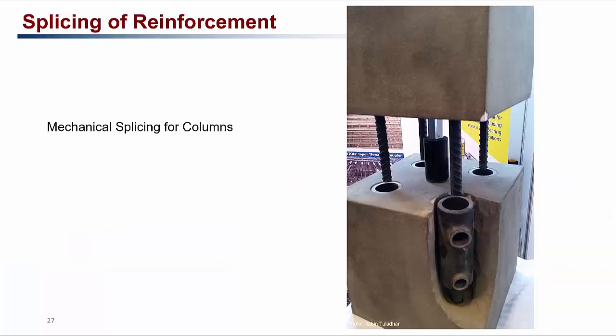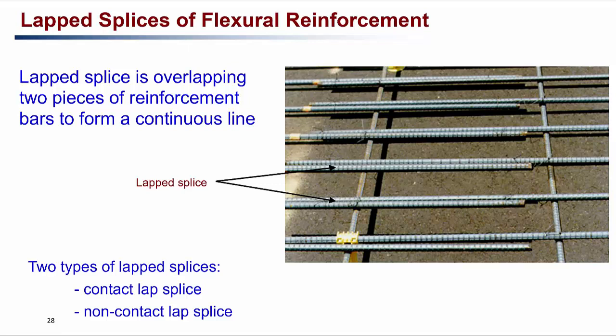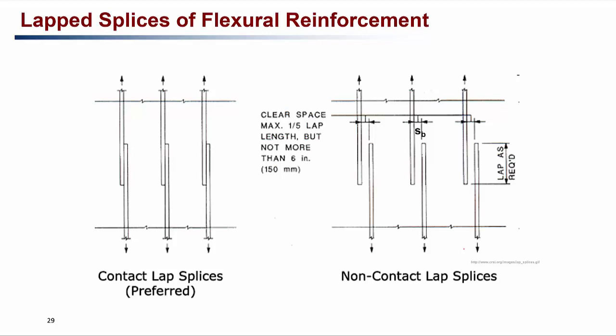Mechanical connectors are also used for columns. For lap splicing of flexural reinforcement, there are two types: contact lap splice, where two bars are in direct contact and tied with wires, and non-contact lap splice, where there is a gap between the overlapping bars. The code limits the clear space between bars in a non-contact lap splice to not greater than 150 mm or one-fifth of the required lap length.